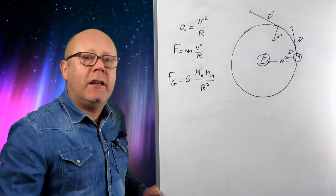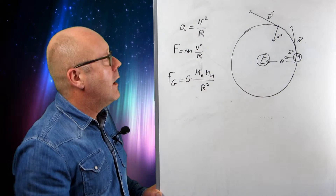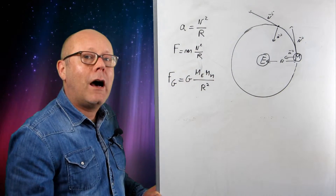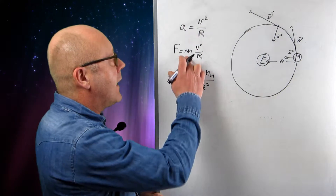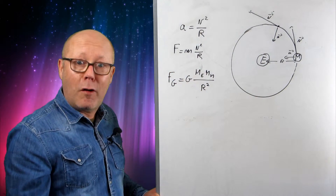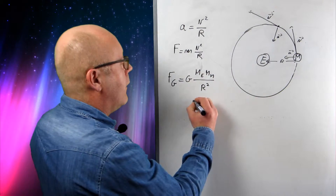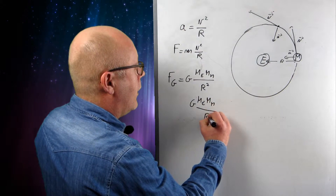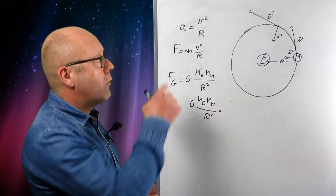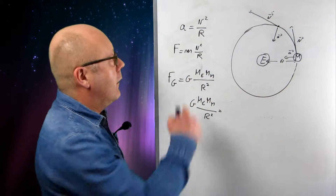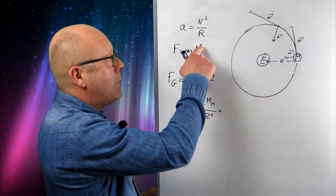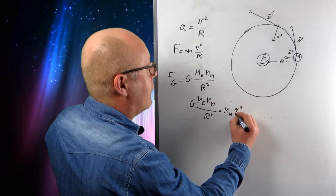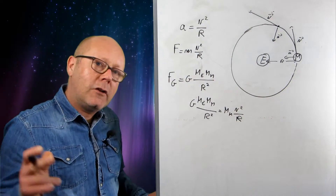Now, this force of gravity is what is causing the circular motion. Therefore, it is also equal to mv² / R. Now it's becoming interesting, because I can equate these two and solve problems. The force of gravity is going to be equal to what is called the centripetal force, i.e., the mass of the object in circular motion multiplied by v² / R. So that's the mass of the Moon by the speed squared of the Moon, divided by R.